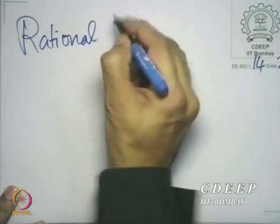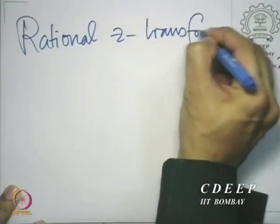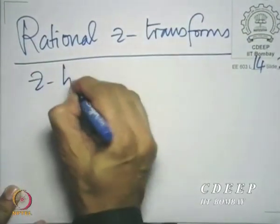What I just illustrated is what is called a method of partial fraction expansion. It is a method of expanding a rational Y(z) in terms of factors, where there are denominator terms, each acquiring the value zero only at one point in the z-plane. We often deal with this class of Z-transforms. Let us introduce this class — we call them rational Z-transforms.